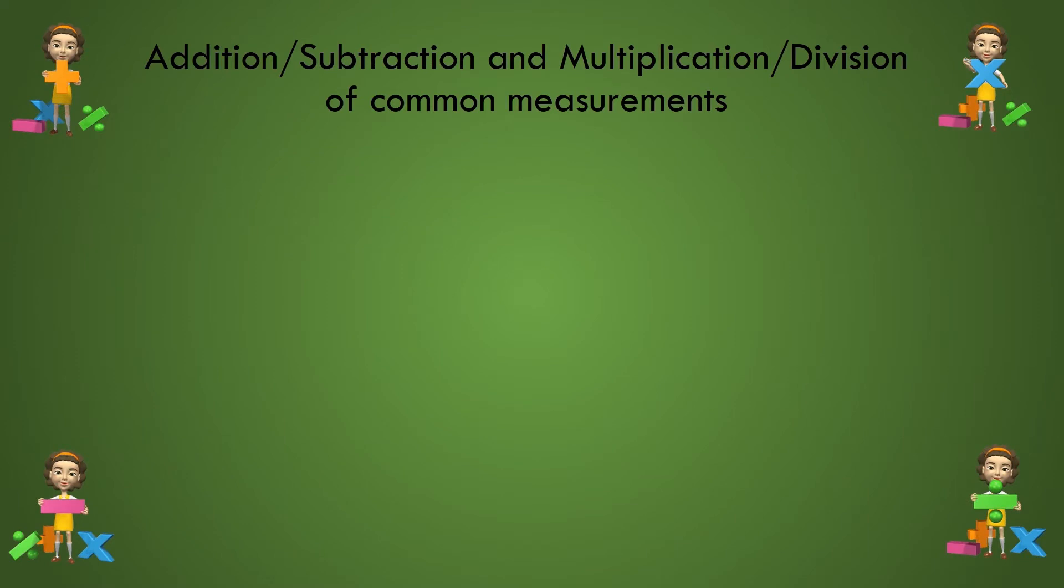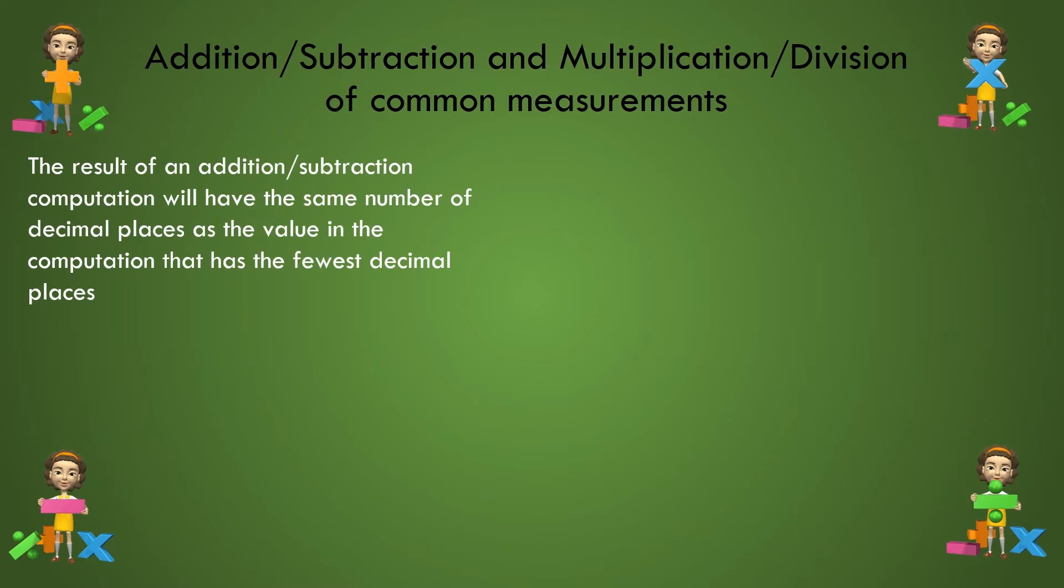First, we will do sig fig addition and subtraction. The rule is that the result of an addition-subtraction computation will have the same number of decimal places as the value in the computation that has the fewest decimal places.